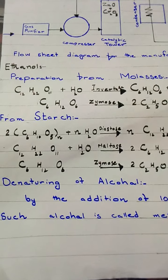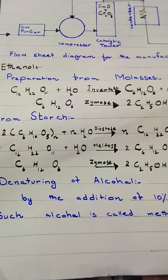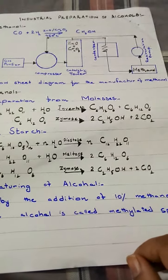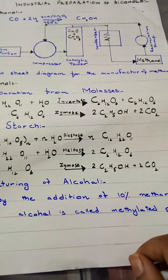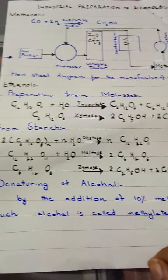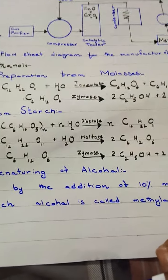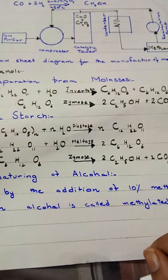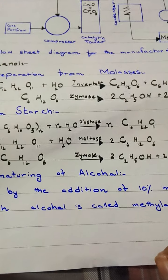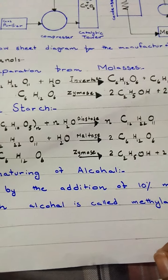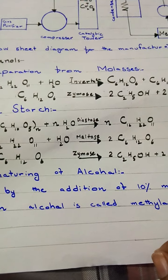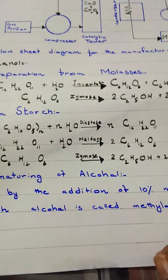Denaturing of alcohol: sometimes ethanol is denatured by the addition of 10% methanol to avoid its use for drinking, and such alcohol is called methylated spirit. A small quantity of pyridine or acetone may also be added for this purpose.